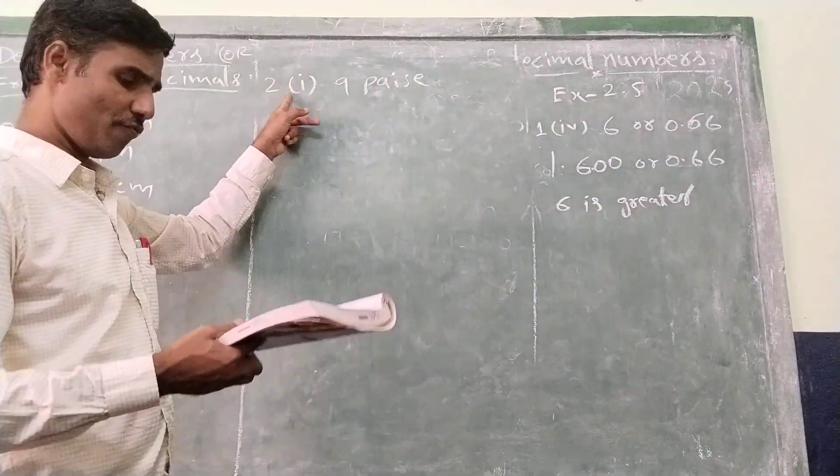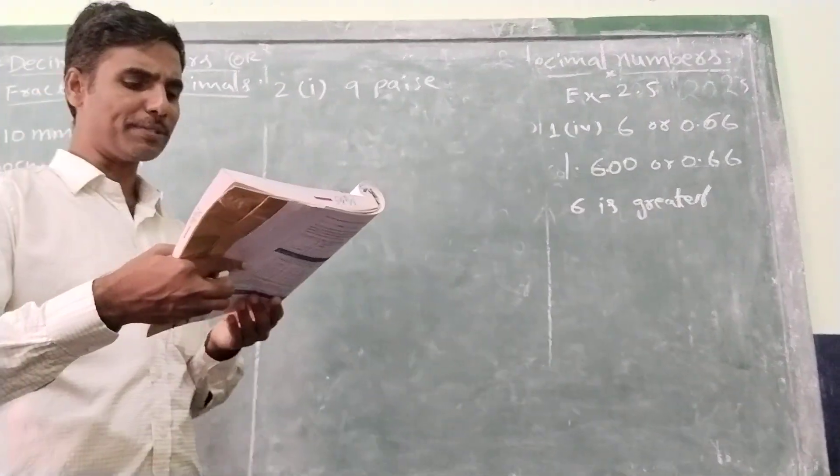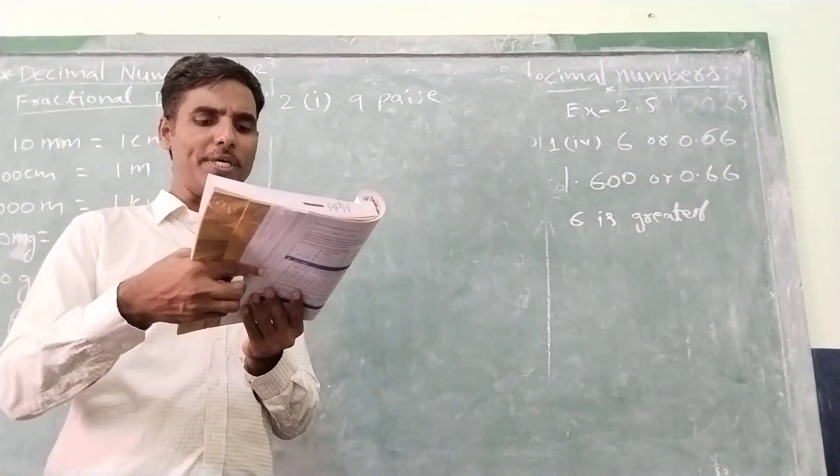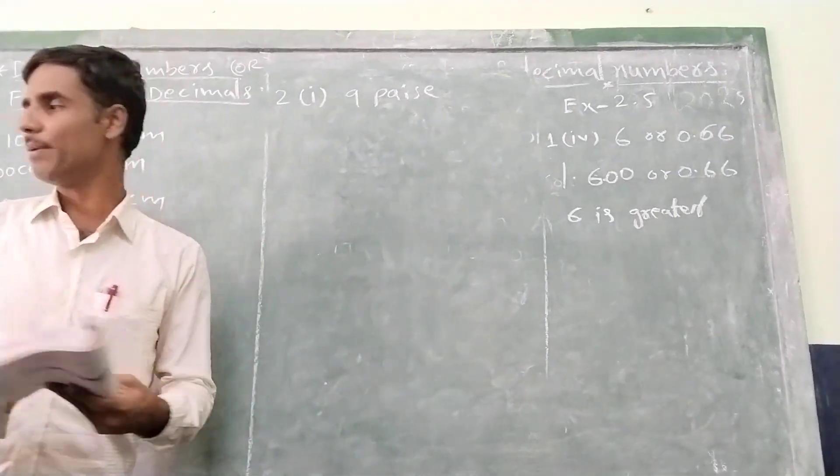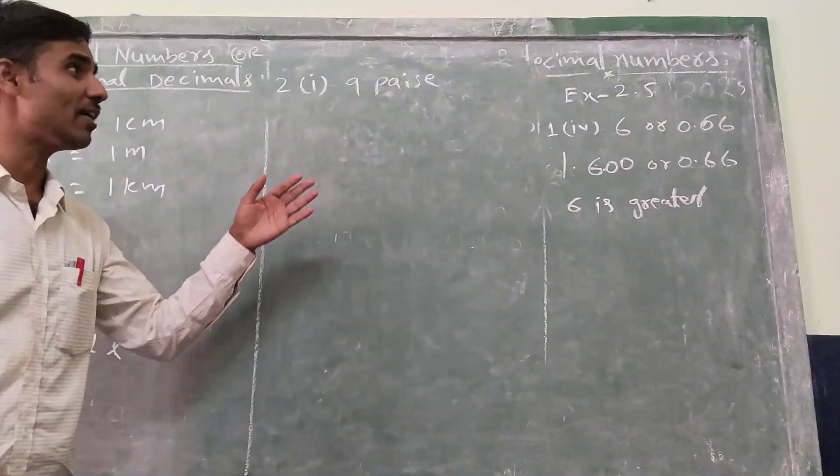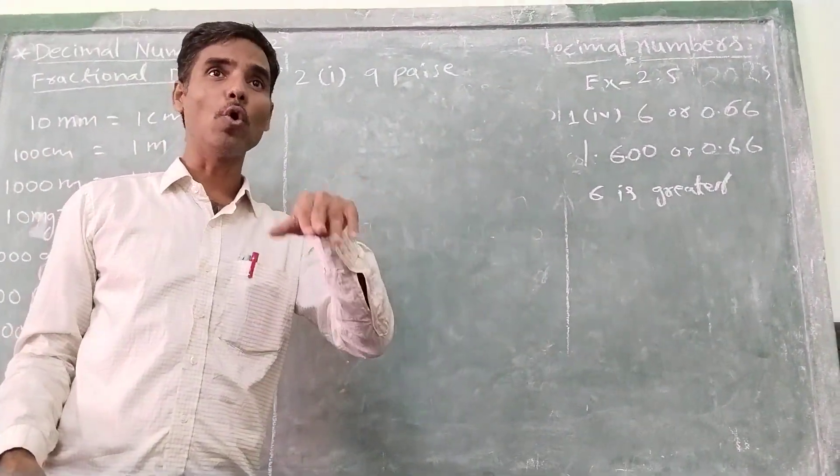Question 2(i): Express the following as rupees using decimals. 9 paisa is given. We have to convert 9 paisa to rupees.